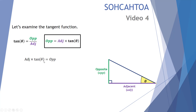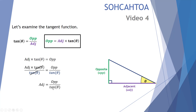Next, if we take that starting point and divide both sides by tan of theta, the tan theta on the left-hand side cancels out, leaving us with: the adjacent side length is equal to the opposite side length divided by the tangent of the angle theta. That's our second equation, which allows us to calculate the unknown adjacent side length.